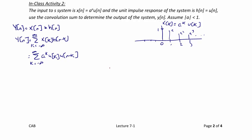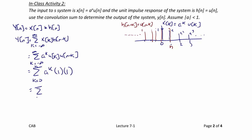Now let's make a sketch of u of n minus k. We'll put it at a different spot so you can see how it shifts. h of n minus k equals u of n minus k. The leading edge is n, and all values to the left have an amplitude of 1 all the way to negative infinity. Once again, we see that this limits our summation because we only get a non-zero value when n is greater than zero. So, this is the summation from k equals zero to n of a to the k.